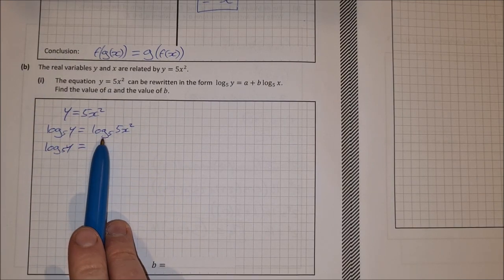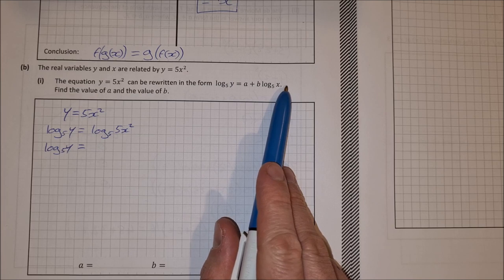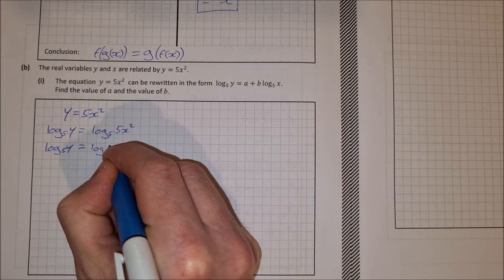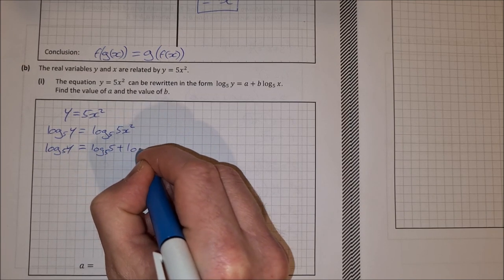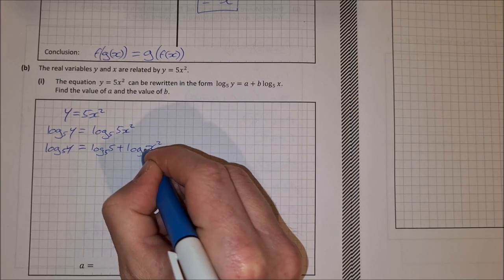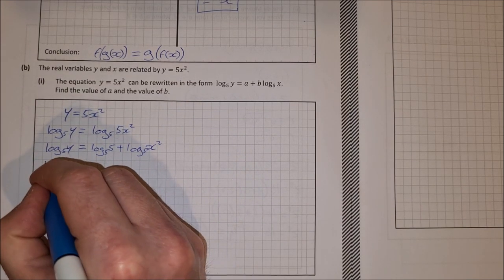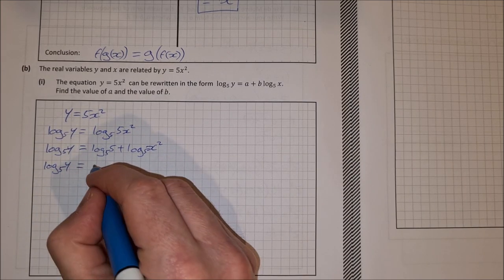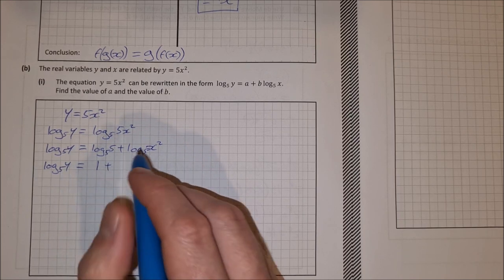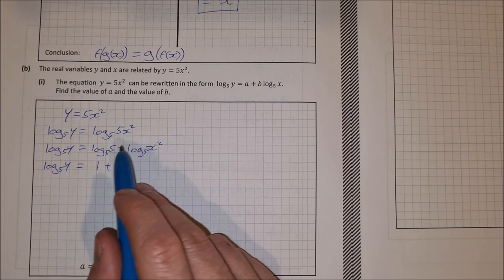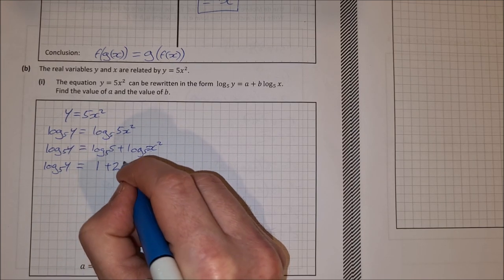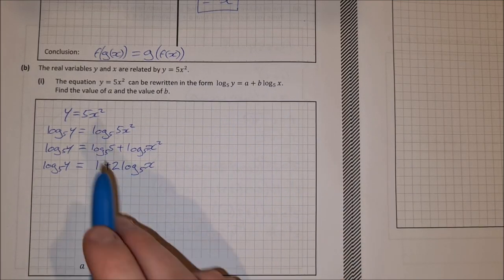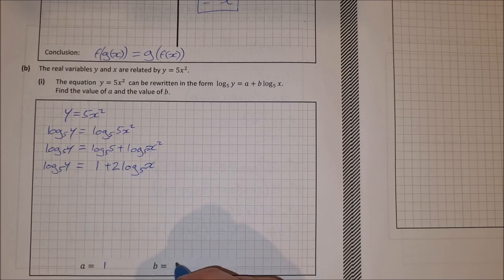Using the laws of logs, I split the right-hand side into log base 5 of 5 plus log base 5 of x². Log base 5 of 5 equals 1, and the log base 5 of x² gives 2 log base 5 of x. So now it's in the required form, meaning a = 1 and b = 2.